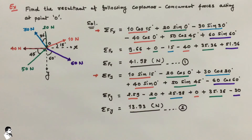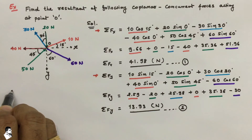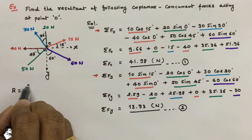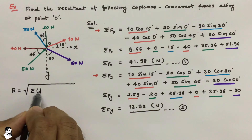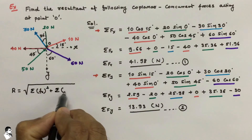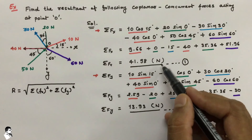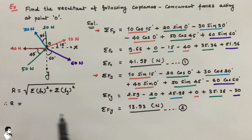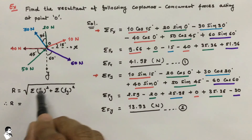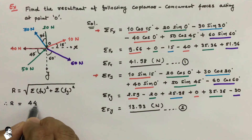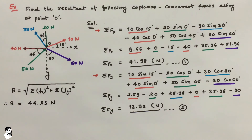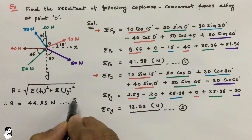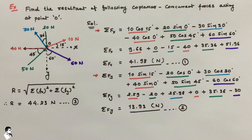To find the resultant of the forces, we use the equation for magnitude of the resultant: R equals the square root of (ΣFx² + ΣFy²). Substituting the values we obtained — 41.98 Newton along X and 13.93 Newton along Y — the resultant magnitude works out to be 44.23 Newton. This is only the magnitude.